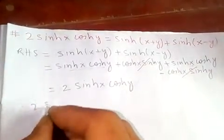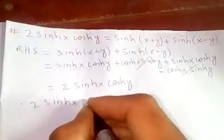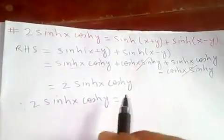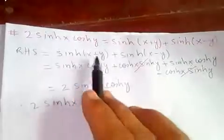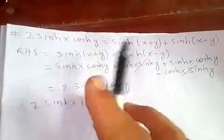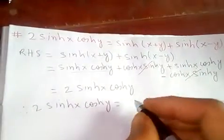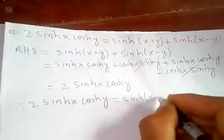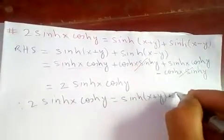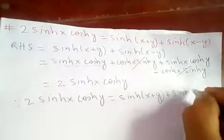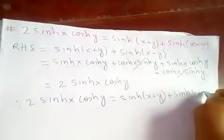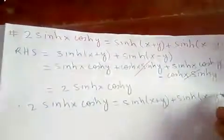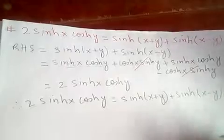So 2·sinh(x)·cosh(y) — since we proved from the right-hand side and obtained the left-hand side, that means the two are equal: sinh(x+y) + sinh(x-y) = 2·sinh(x)·cosh(y). That's it.